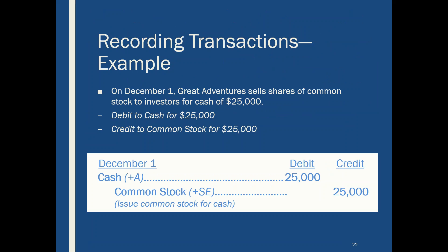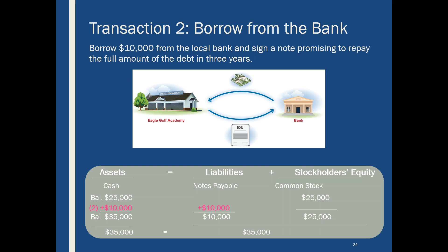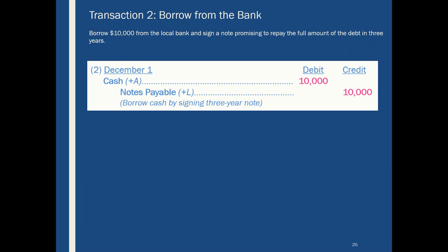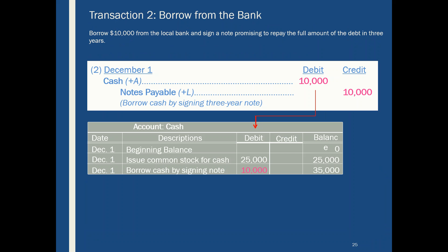Another transaction is borrowing money from the bank and promising to repay them. In this case, $10,000 increases our cash and $10,000 increases notes payable. This is what the transaction recording looks like — transferring things from the general journal to the general ledger. We already recorded $25,000 in our cash account, and now we add the $10,000 borrowed, so cash goes up.